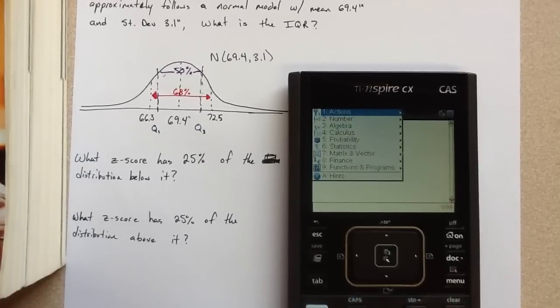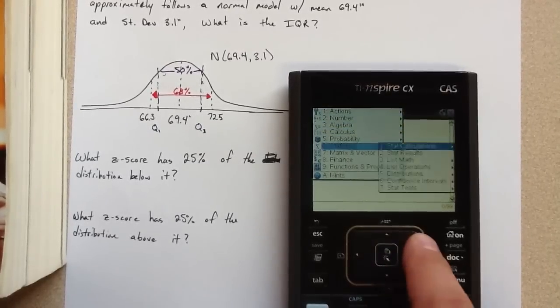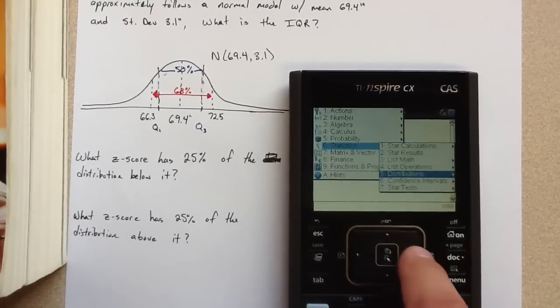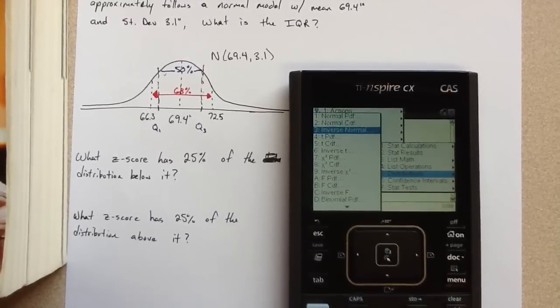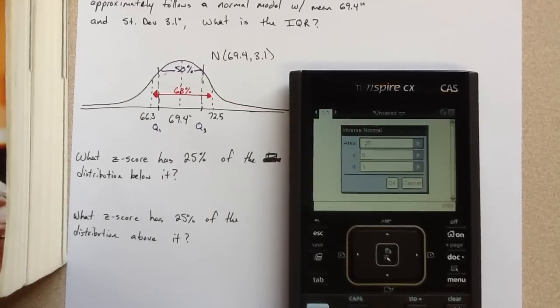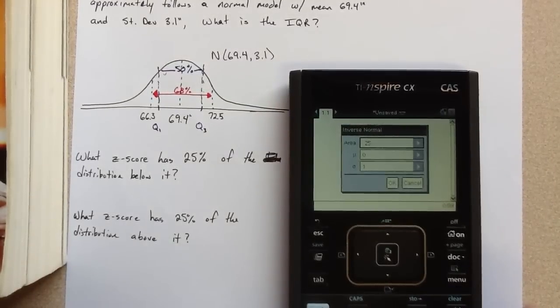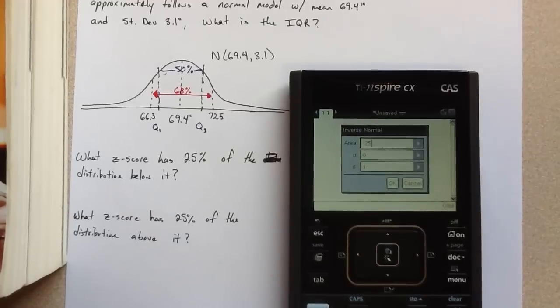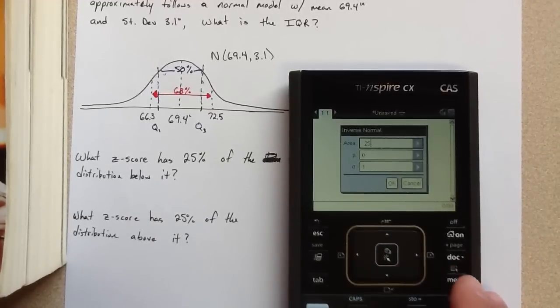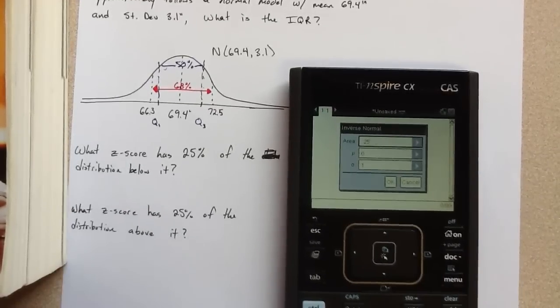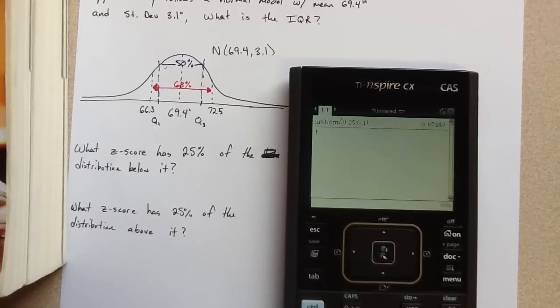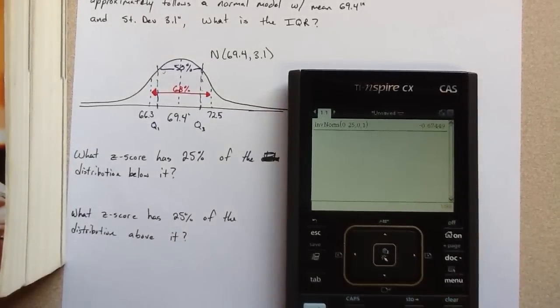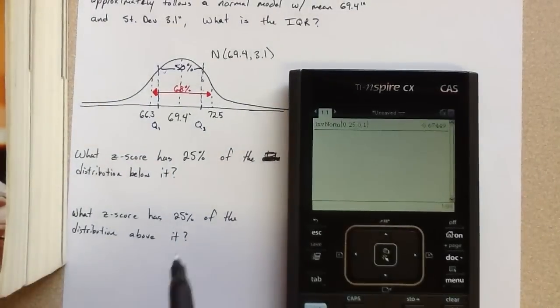Alright, I'm going to use the distributions menu, the inverse normal function. And we're going to find the z-score at 0.25, or that has a 0.25 probability. And we get that that is about negative 0.6749.